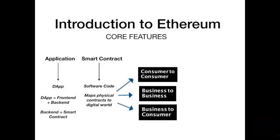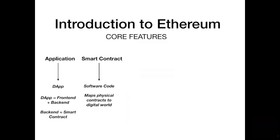Smart contracts can also facilitate business-to-consumer transactions, like an insurance or health contract that rewards people for good health behaviors, or even system-to-system transactions, enabling systems to work in a secure and autonomous way — for instance, a contract that defines whether a new device can connect seamlessly to your connected home system.